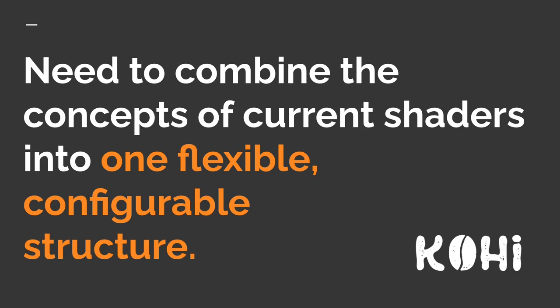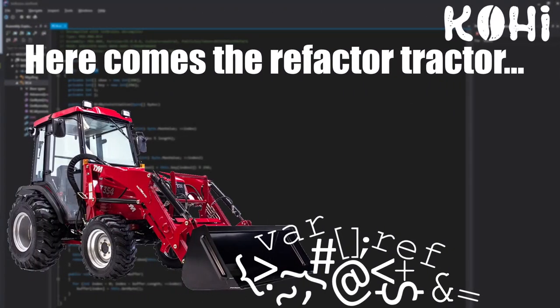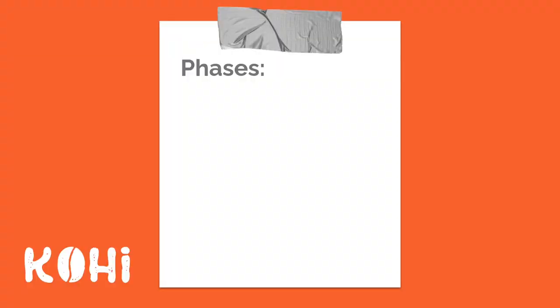Right now we have our material shader and our UI shader, and we need to take those two concepts, combine the differences between them, and make them configurable by providing parameters and flipping flags. So naturally, this means it's time for the refactor tractor. We're going to accomplish this in several different phases because this is actually a big part of the system, and it's going to be a little bit of work to get this going the way we want.